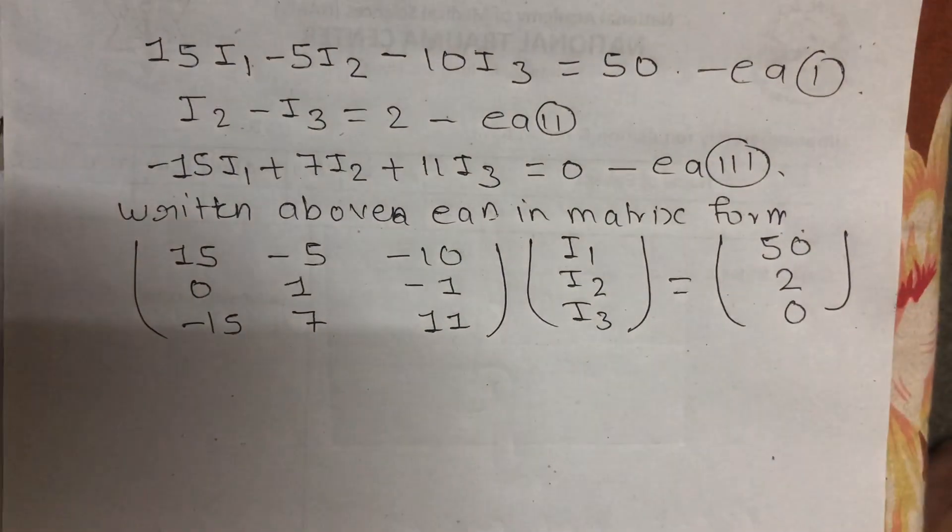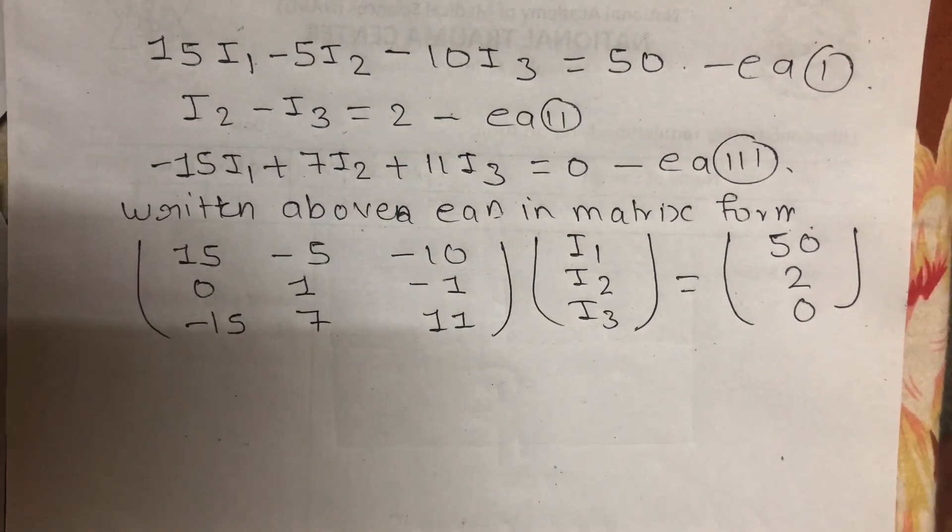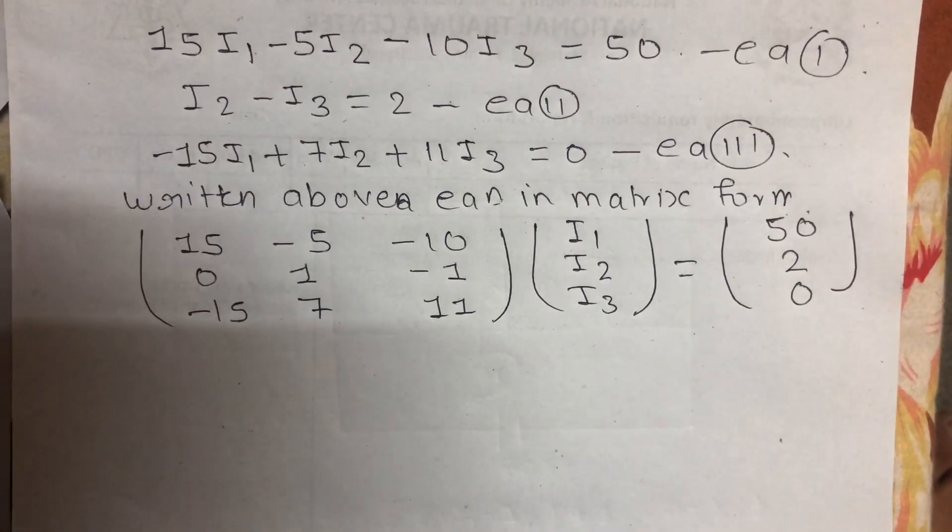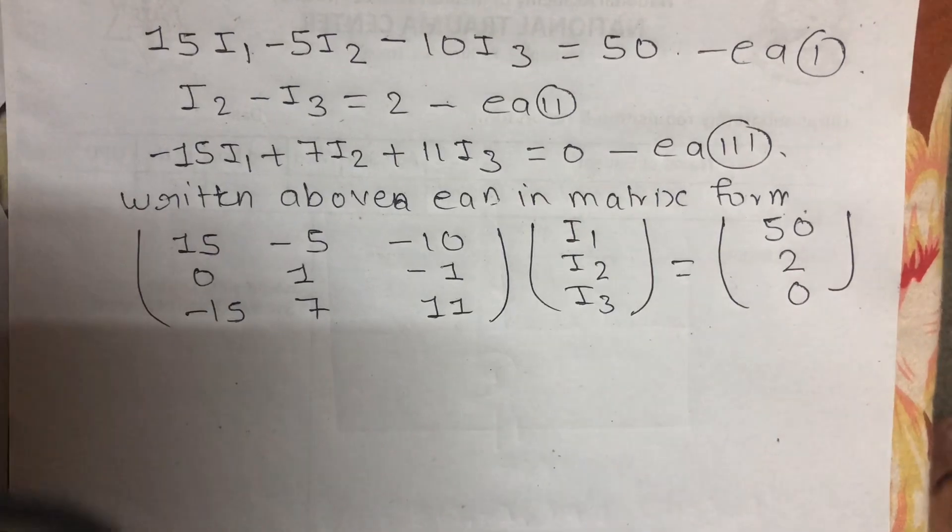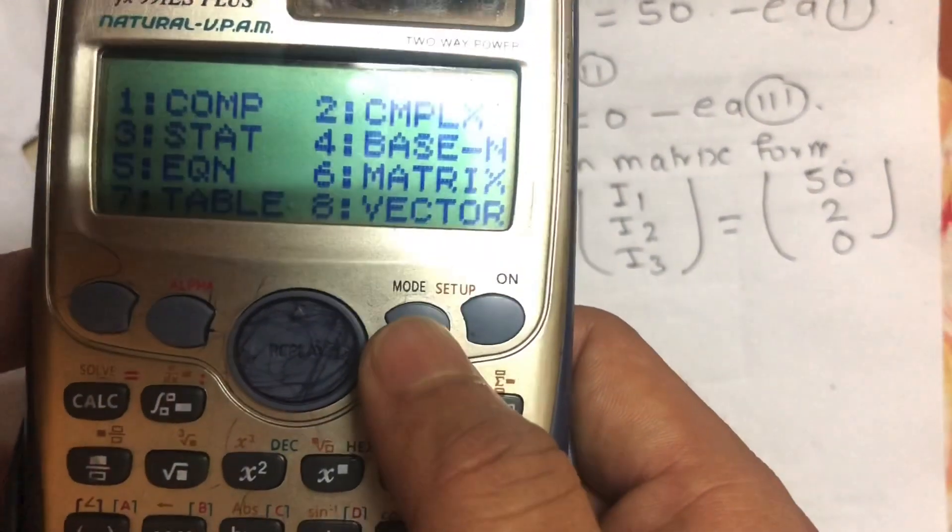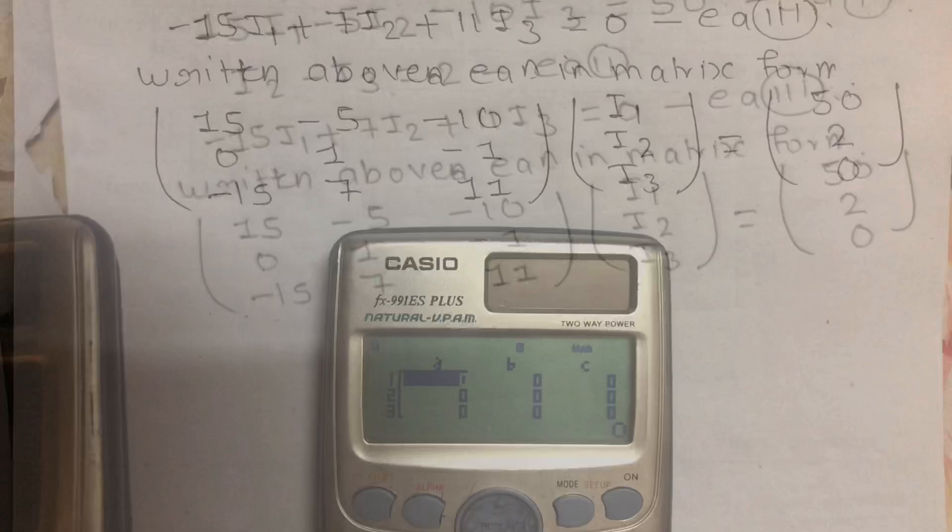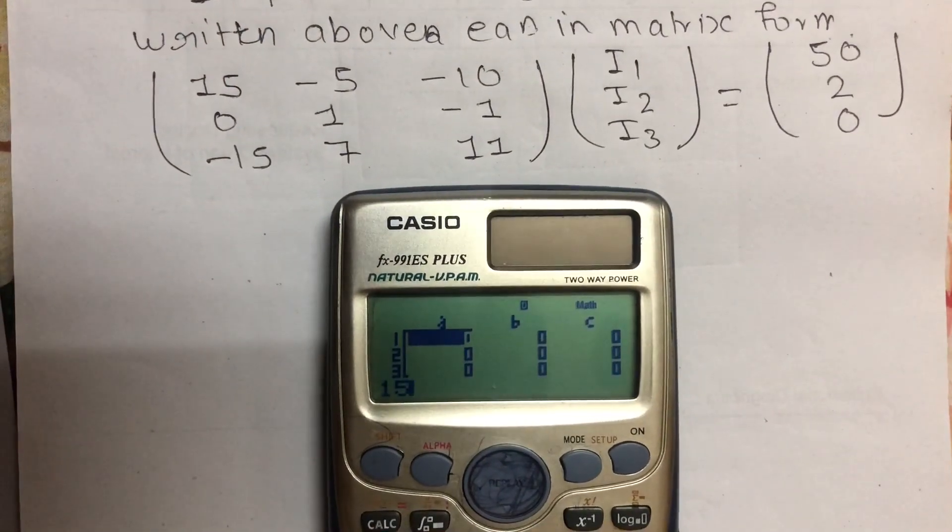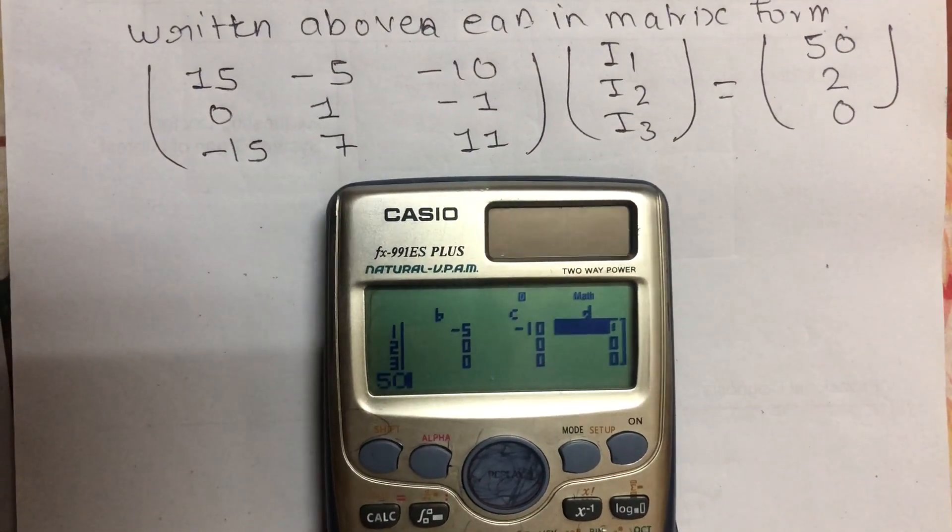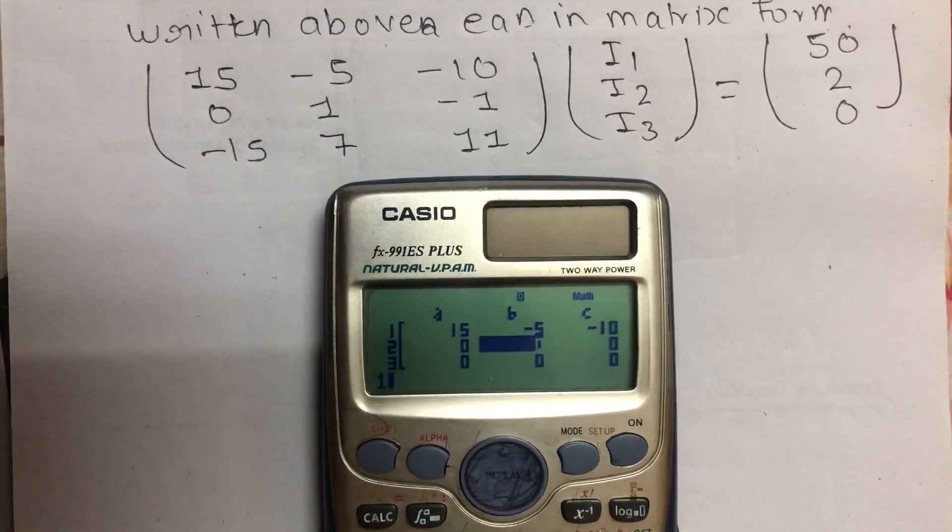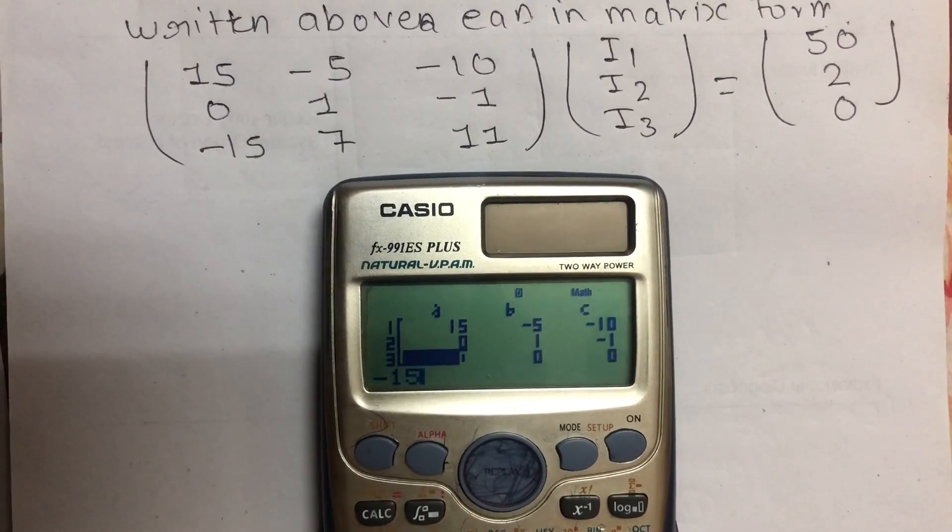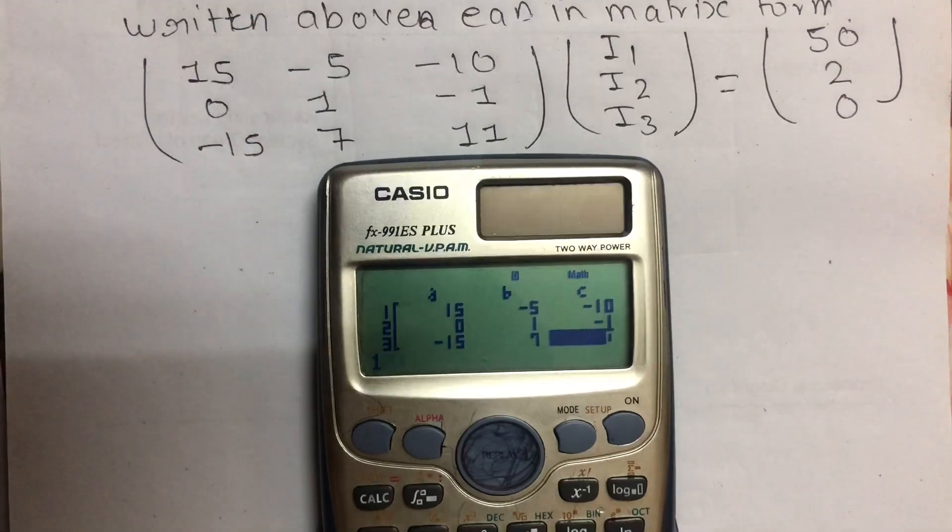Now we can solve using calculator. Turn the calculator on, go to mode, select equation mode 5, then 2 for 3x3. Enter: 15 equals, minus 5 equals, minus 10 equals, 50. Then 0, 1, minus 1, 2. Then minus 15, 7, 11, 0.